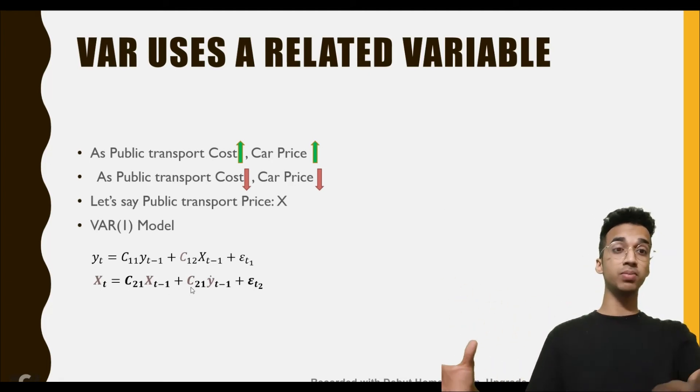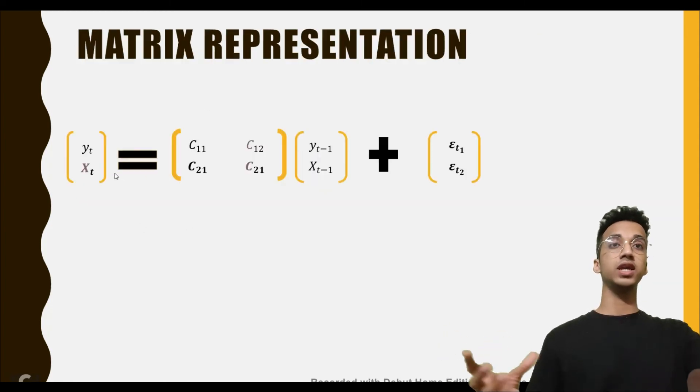Another thing to learn is the matrix representation, which is also very easy. These two equations are represented in the form of a matrix, and if you have learned matrix multiplication you should be able to see how this is the same. In matrix multiplication, you multiply the first row by the first column of the second matrix and you get c11*y_{t-1} + c12*x_{t-1}.